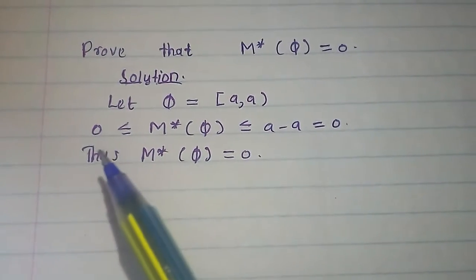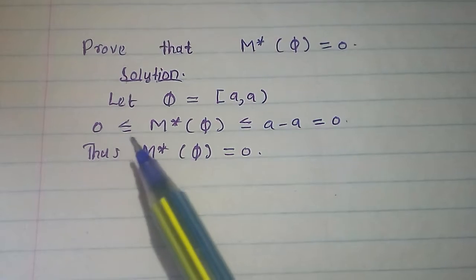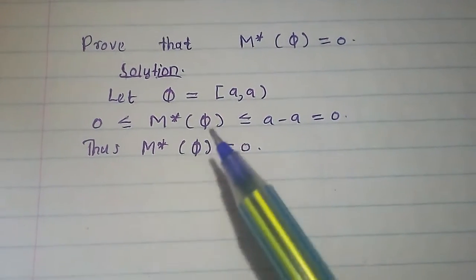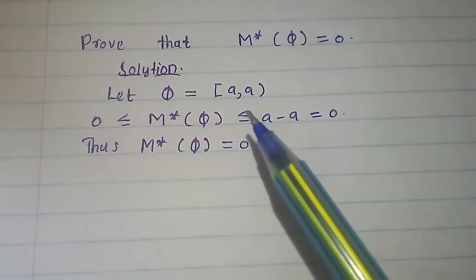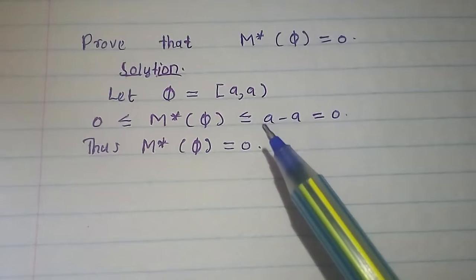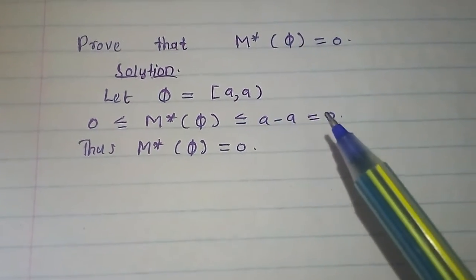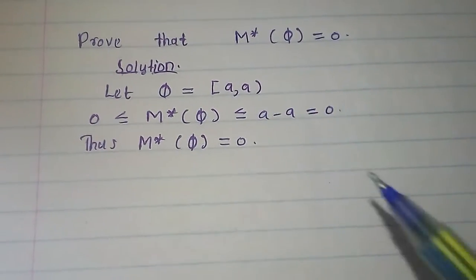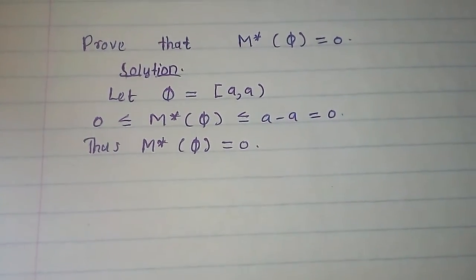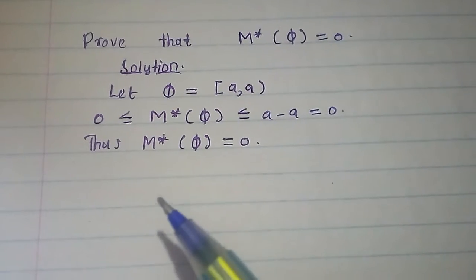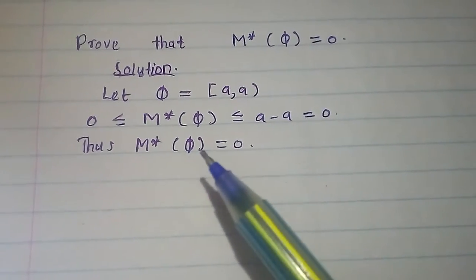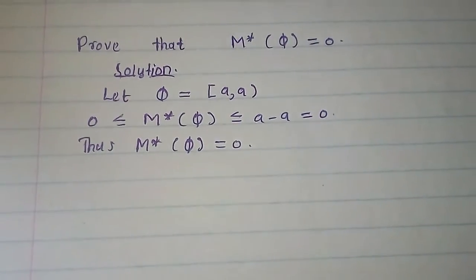From this, we have 0 ≤ m*(∅) ≤ A minus A, which equals zero. Thus, this confirms that the outer measure of an empty set equals zero.